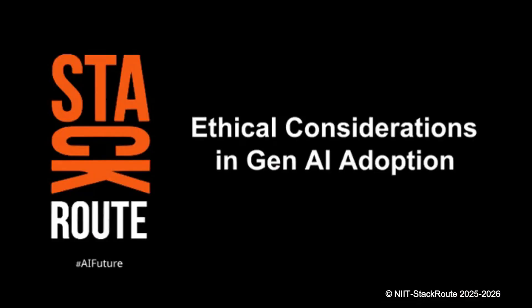Hello everyone. When we talk about ethical considerations in generative AI, we're looking at some pretty important issues. For instance, how do we ensure these systems make decisions transparently and don't amplify existing biases? We need to think about privacy and the broader societal impact of automating more tasks. It's all about balancing the incredible benefits of AI with the need to handle these challenges responsibly.